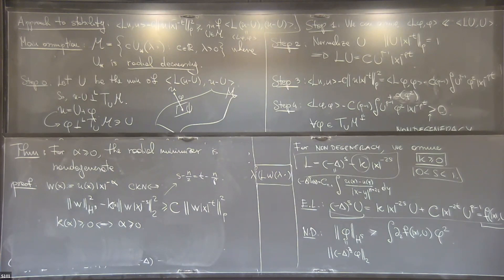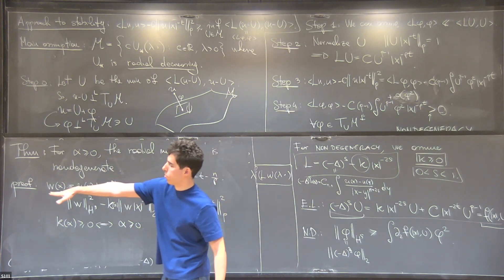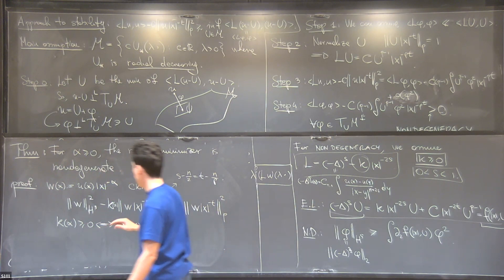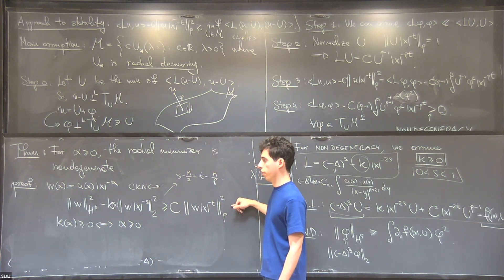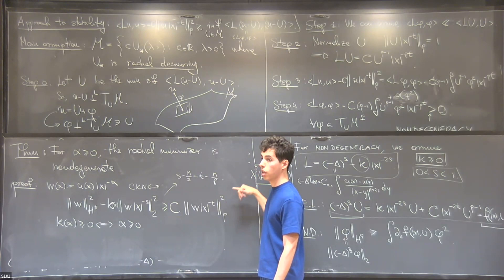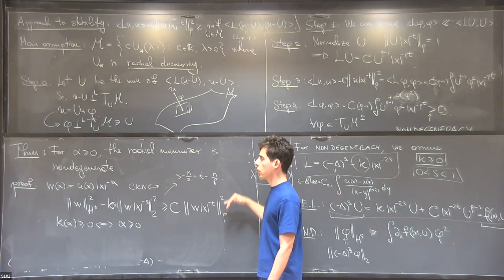Question: Could you clarify how the transformation rewrites the CKN inequality into the abstract framework? Answer: If you plug in the substitution u(x) = W(x)·|x|^α and compute all terms — replacing every u by W·|x|^α and doing the computation — you find the CKN inequality is equivalent to the abstract form ‖W‖_{Ḣ^s}² ≥ C‖W‖_{L^t}² (with the weight). Applying this gives not only that minimizers are radial (already known), but non-degeneracy and hence stability.